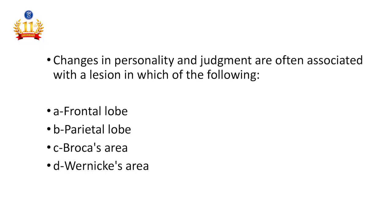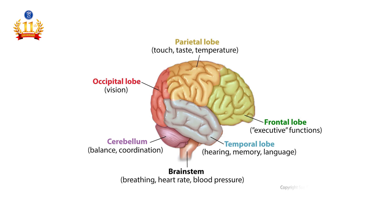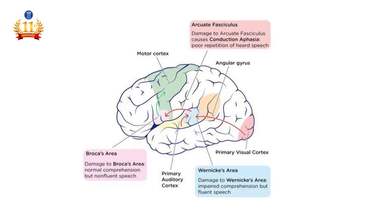Tenth question: Changes in personality and judgment are often associated with a lesion in which of the following? Frontal lobe, parietal lobe, Broca's area, or Wernicke's area. The answer is the frontal lobe. Personality changes and judgment are major functions of the frontal lobe. You can also review the major functions of each lobe, as well as Broca's area and Wernicke's area functions from the reference picture.